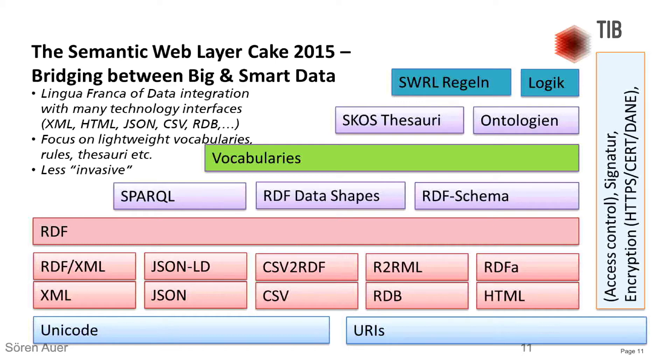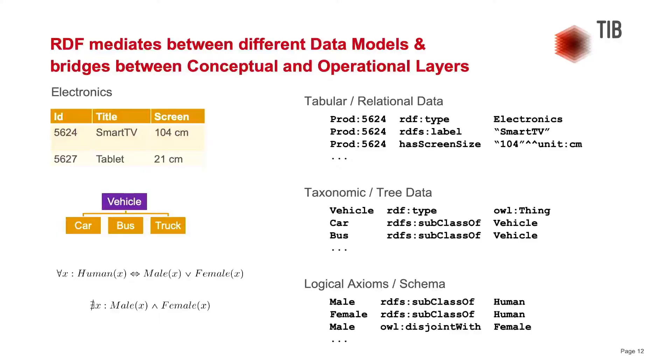I see RDF, in a way, as a way to bridge and mediate between different data models and different technology ecosystems. We have relational data — and Secreta has talked about this a bit — but I think this is only one dimension. We also have taxonomic tree data, logical axioms. The advantage of semantic technologies and knowledge graphs is that they can mediate between these different data models, and also between conceptual and operational layers. You can model things in ontologies and vocabularies, but at the same time make it operational — something which was previously a bit separated.